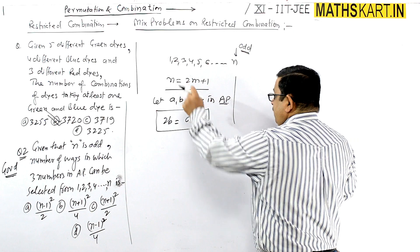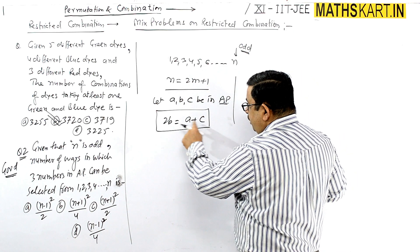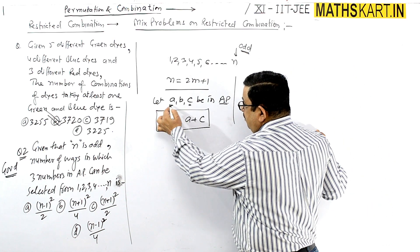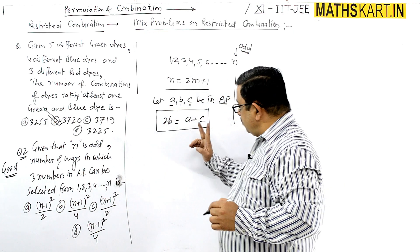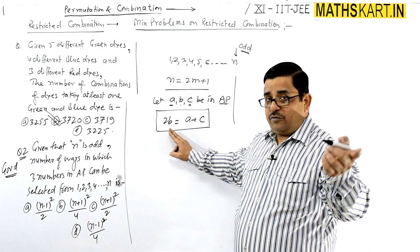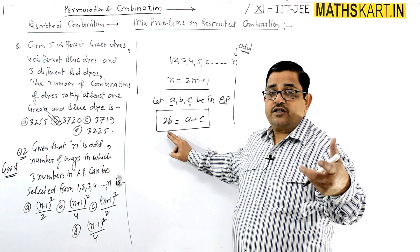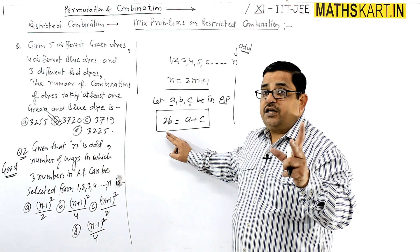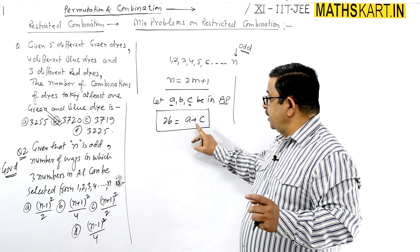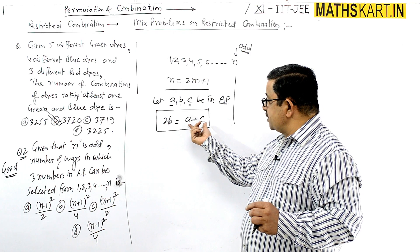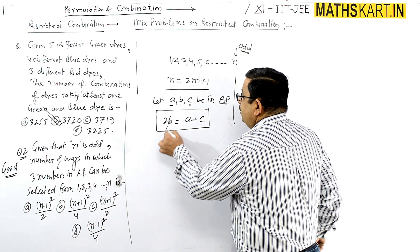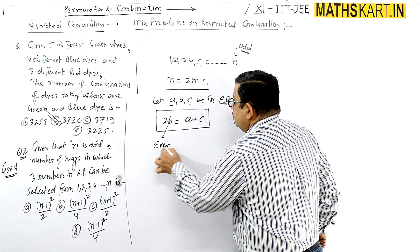We only need to select two numbers — a and c — because b is determined automatically. If you know the two extreme numbers, the middle number equals half their sum. So b = (a + c)/2. Since b must be an integer, a + c must be even, which means 2b is an even number.